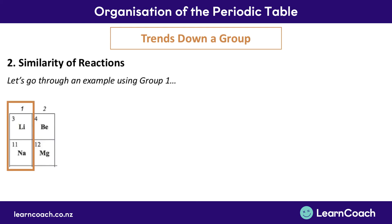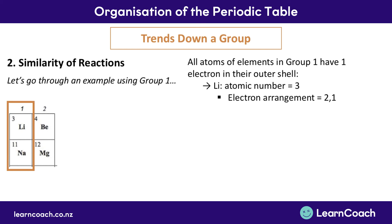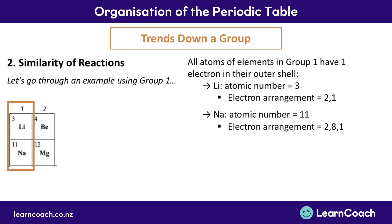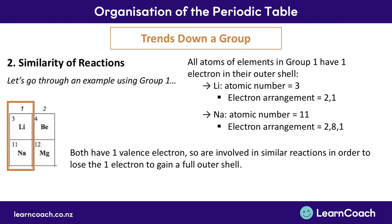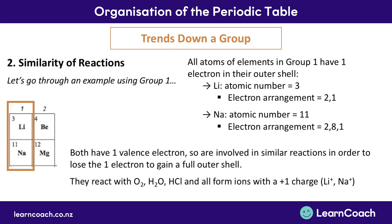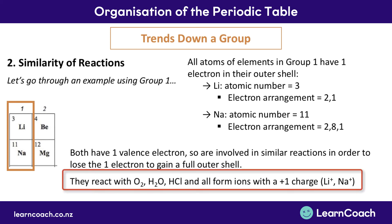Let's go through an example using group 1. Group 1 elements all have one electron in their outer shell. Lithium has an electron arrangement of 2, 1, and sodium has an atomic number of 11 with an arrangement of 2, 8, 1. Both sodium and lithium are involved in similar reactions in order to lose that one electron and gain a full outer shell. You need to memorize that lithium and sodium react with oxygen, water, and hydrochloric acid, forming ions with a plus one charge.